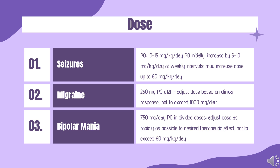PO (Depakine/Stavzor): 15 mg/kg/day initially, divided Q6–12H, increased by 5–10 mg/kg/day at weekly intervals; may increase dose up to 60 mg/kg/day.